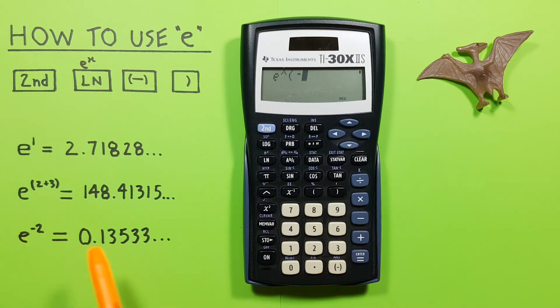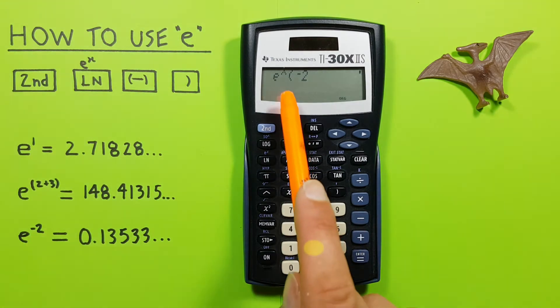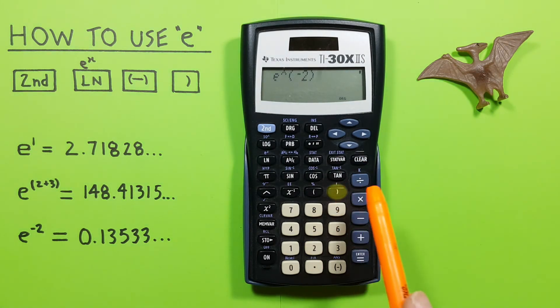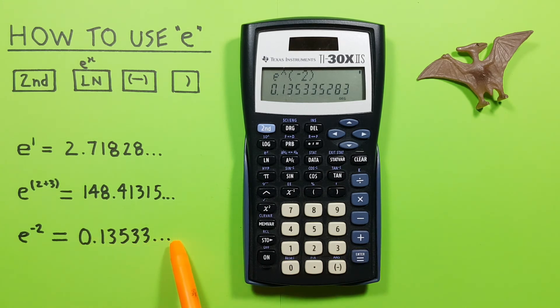And then we enter our exponent, which was 2. So we have negative 2, close our bracket, and press equals. And we get a result of 0.13533, etc.